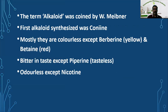The term 'alkaloid' was coined by W. Meissner. The first alkaloid synthesized was conine, from Conium maculatum, commonly known as poison hemlock — a very poisonous plant. That was the first alkaloid extracted. Most alkaloids are colorless, except berberine, which is yellowish in color, and betanin, which is red in color.